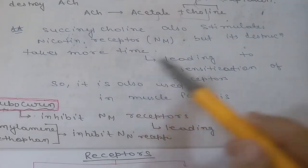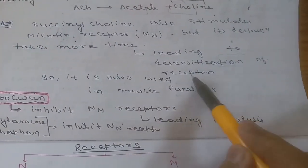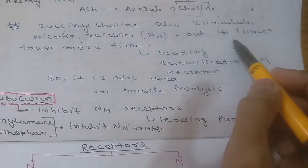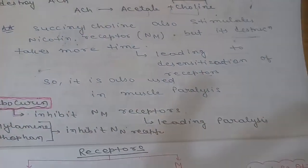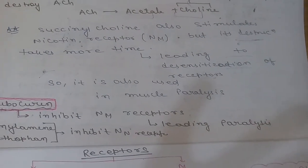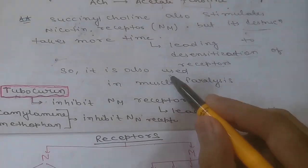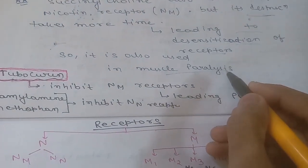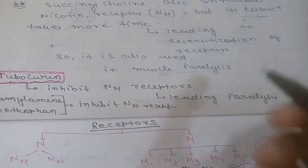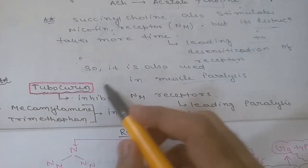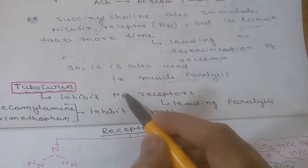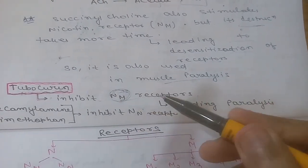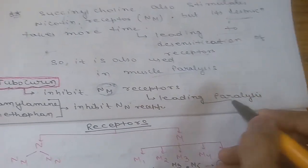Succinylcholine also stimulates nicotinic receptors but its destruction takes longer, leading to desensitization of the receptor and causing muscle paralysis. Tubocurarine inhibits NM nicotinic receptors, also causing paralysis.